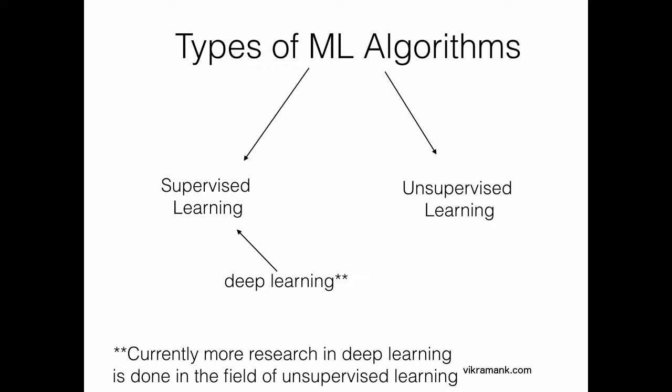Machine learning algorithms can be broadly classified into two categories, namely supervised learning and unsupervised learning. In case of supervised learning, you label the data, and in case of unsupervised learning, the data is unlabeled, meaning that the algorithm should figure out and classify that particular data set on its own. Whereas in supervised learning, you give the labeled data set to the algorithm, meaning that you give both the input and the desired output to the algorithm.